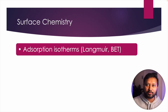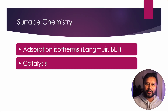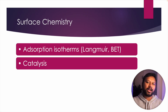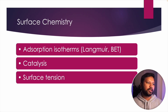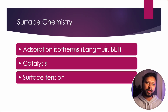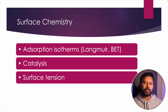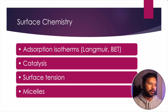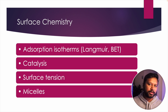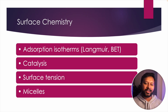Next is surface chemistry. The first topic is adsorption isotherms — cover the Langmuir adsorption isotherm and the BET adsorption isotherm. Then comes catalysis, an important part of surface chemistry where you study how a catalyst provides surface for surface reactions to proceed. Then surface tension — mostly theory-based — covering how surface tension governs atmospheric pressure and various other factors. Finally, micelles, which are an extended part of surface tension; questions on how micelles affect surface tension of a solution have appeared once or twice in CSIR-NET.